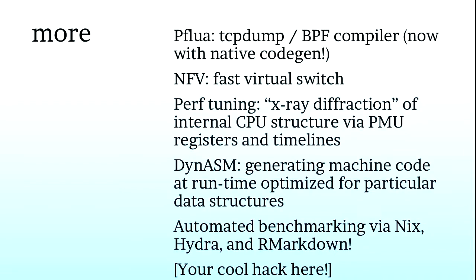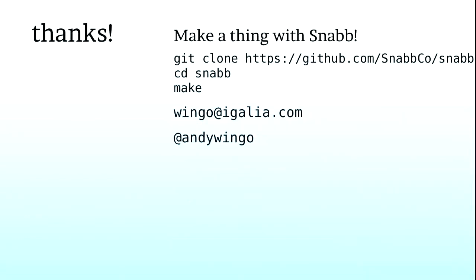There's a lot more going on in the Snabb world. There's also a virtual switch that is deployed in some networks. Because we focus on Xeon servers, we get to emit all the nice AMD64 assembly we want including all the performance timers. Another project for this year is better online instrumentation so you can understand how your app interacts with all the distinct parts of a modern processor. The emitting-assembly runtime also lets us emit an optimized lookup procedure that is optimized for the particular hash table in consideration. Make a thing with Snabb — just check it out.